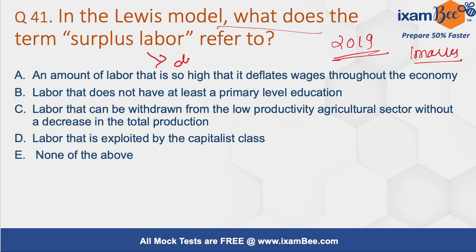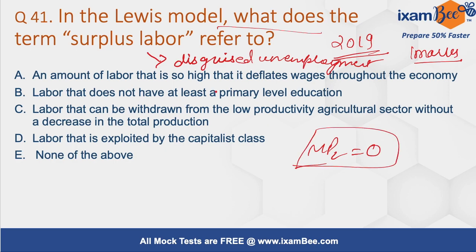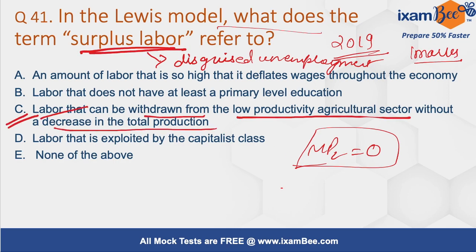Surplus labour means the labour that is engaged in disguised unemployment, where the marginal productivity of labour is zero. As per the Lewis model, this happens in the agricultural sector. Surplus labour is the labour that can be withdrawn from the agricultural sector without decreasing total production due to zero marginal productivity. So option C is the correct answer.